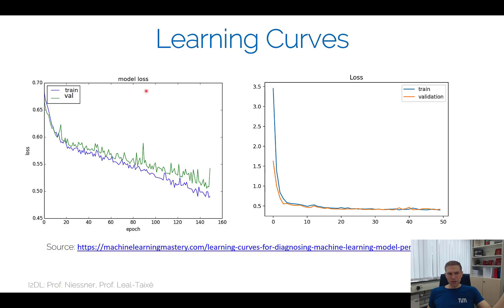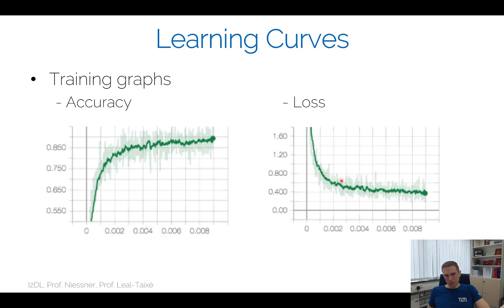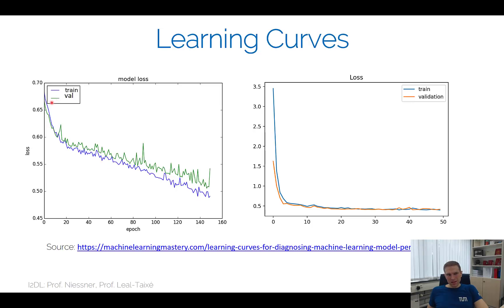Another example: training and validation both go down but look very different. This is a more realistic curve. If it goes down in a linear fashion — slowly rather than sharply at first — the learning rate at the beginning was probably a little too low. A higher initial learning rate would produce a nicer curve with a faster initial descent.